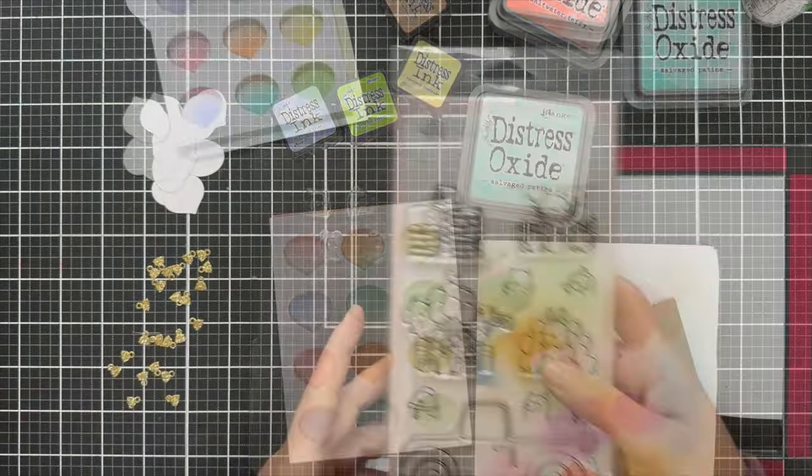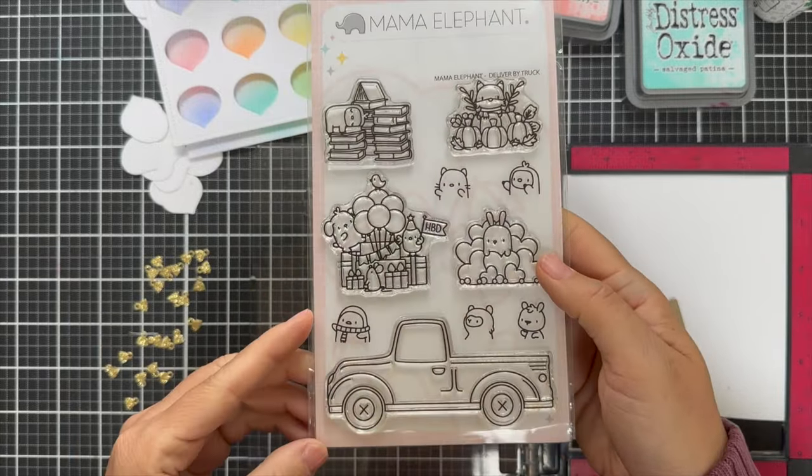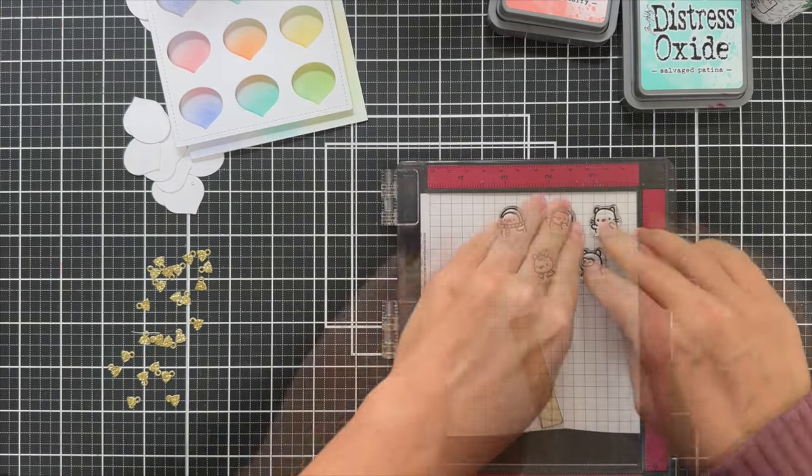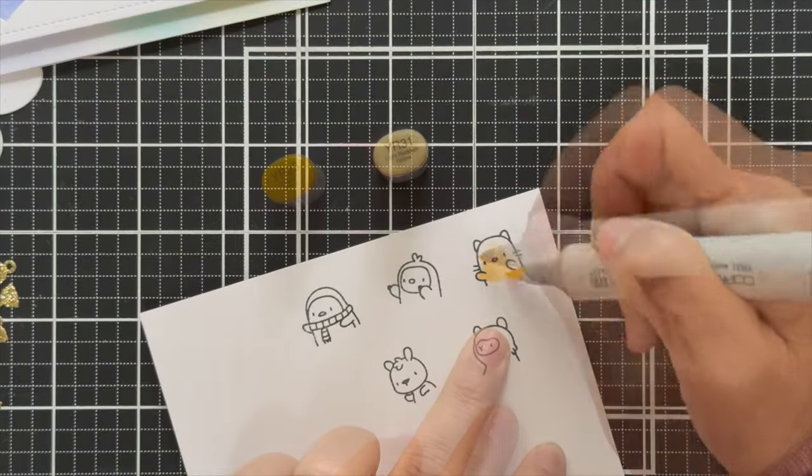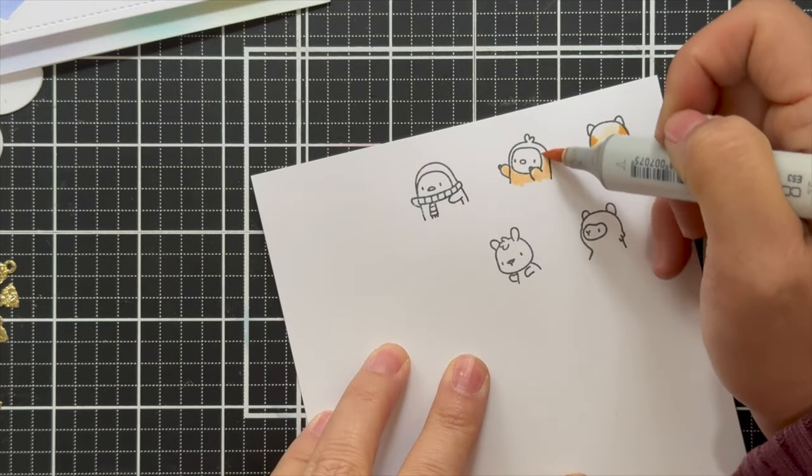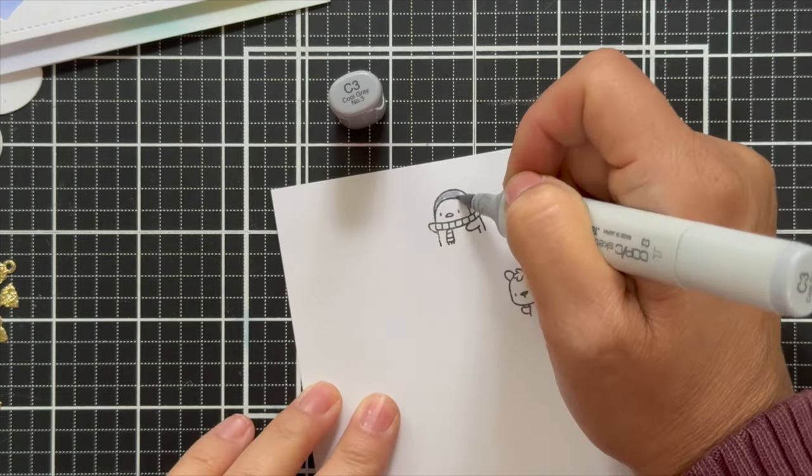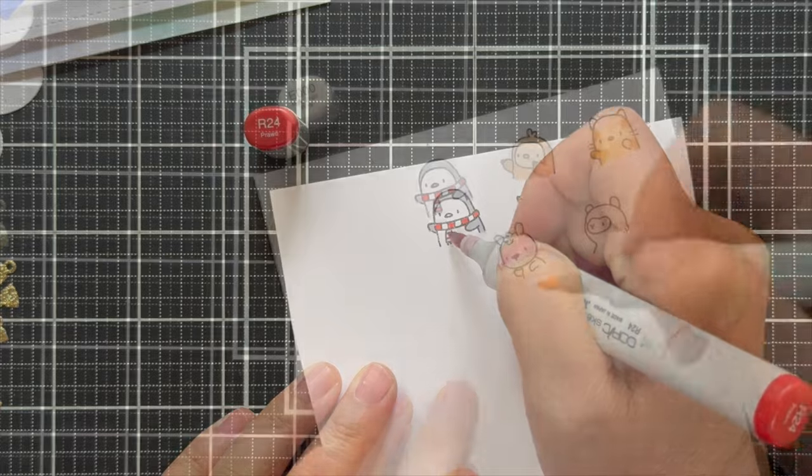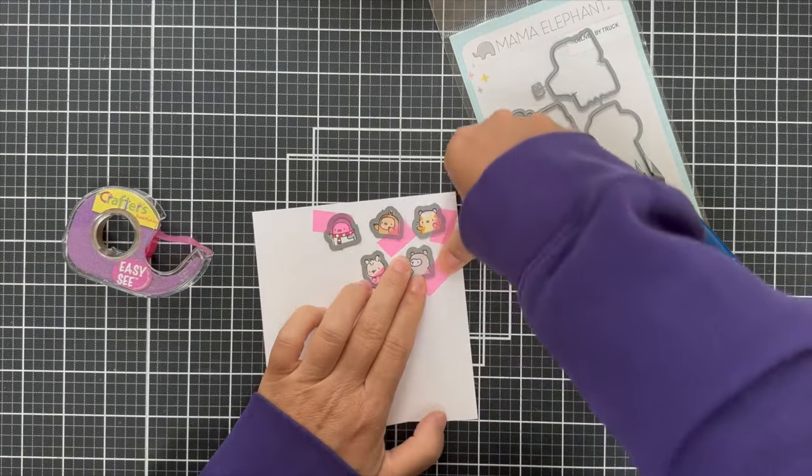You could certainly do red and green. You could do patterned paper behind. Now I had this idea from the Delivered by Truck stamp set. These cute little critters that are actually designed to put in the truck, like they're going to be driving the truck. But I thought they could go inside the little ornaments. So I quickly stamped a few of them. Sometimes I get tripped up and I don't know what these critters are.